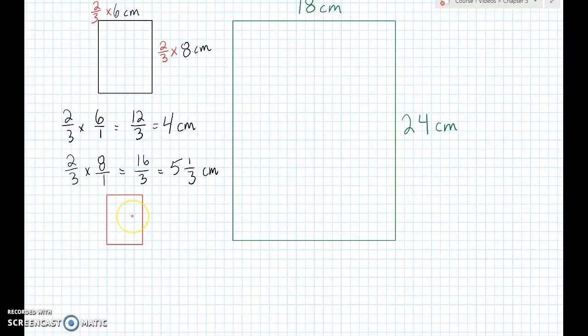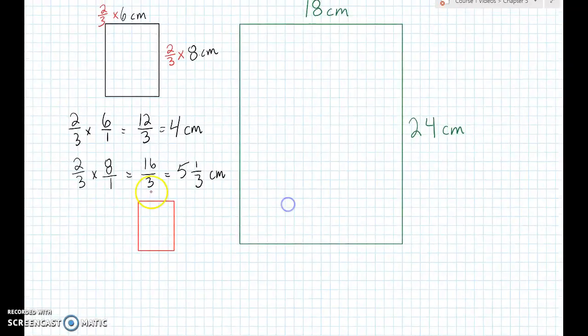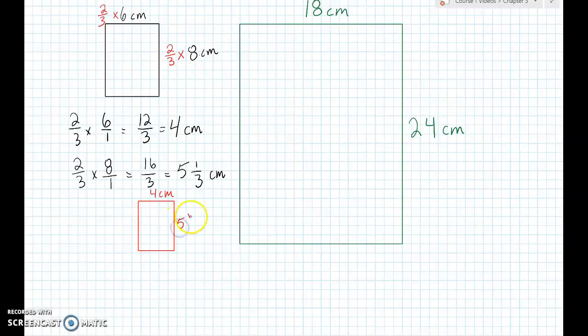So, this is your reduced shape that's been reduced with a ratio of 2 thirds, or 2 thirds of the original. So, this would be 4 centimeters and 5 and 1 third centimeters.